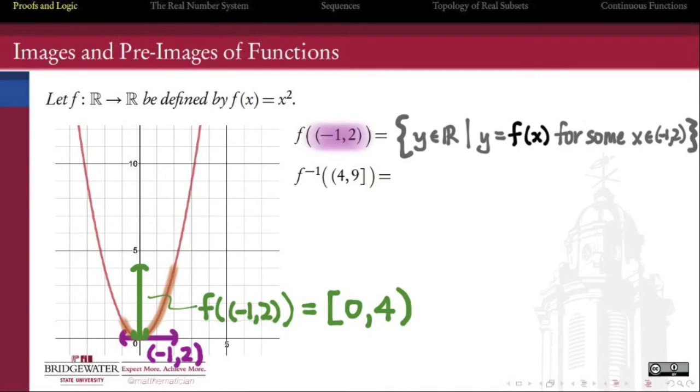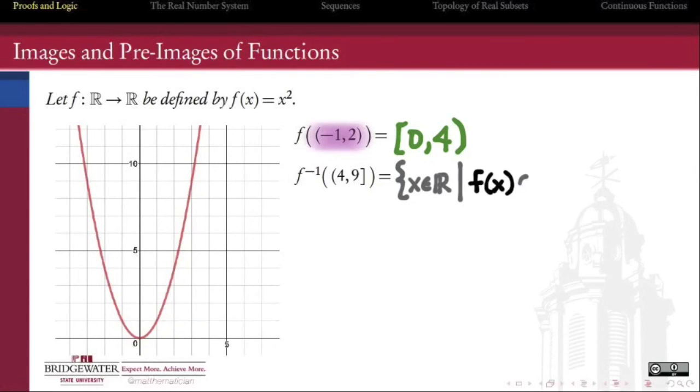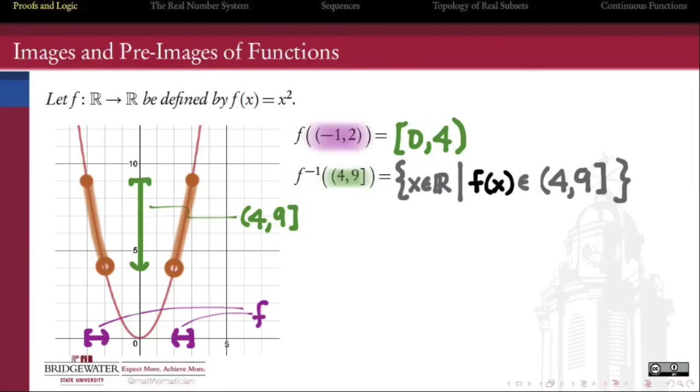Also, backward: if a is a subset of the range of f, then f inverse of a is the subset of the domain containing all the points x for which f of x is in a. This is called the preimage of a under f.